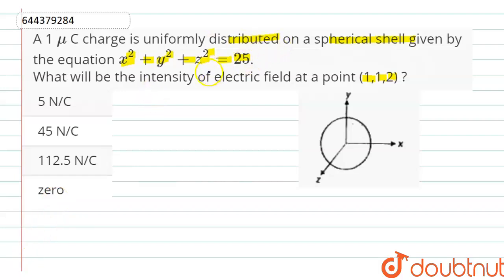Here, according to the question, the 1 micro coulomb charge is uniformly distributed on a spherical shell is given by the equation x² + y² + z² = 25. From this equation, we can say that